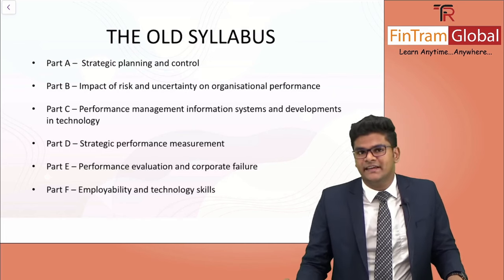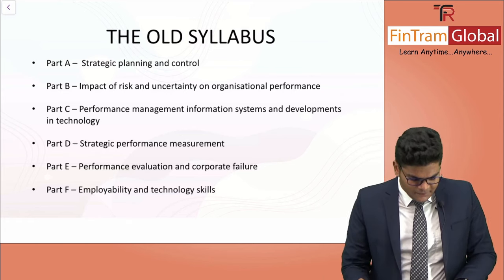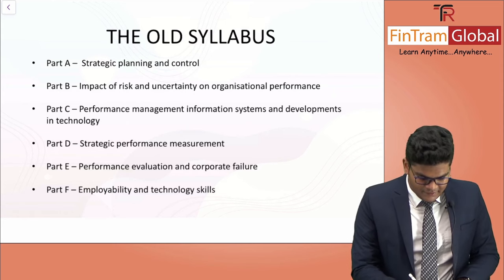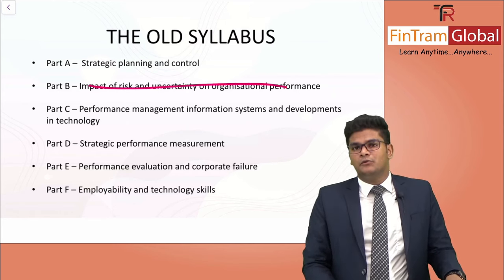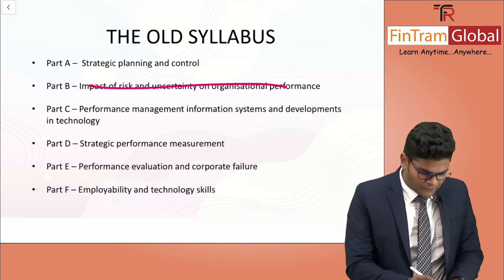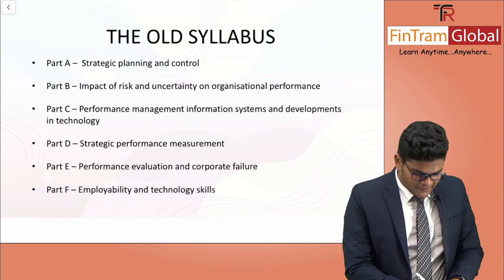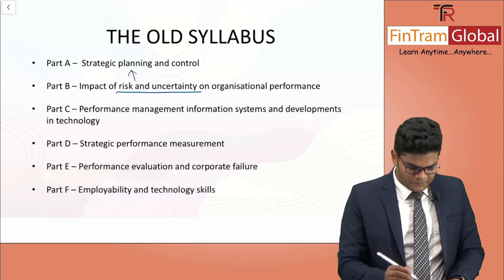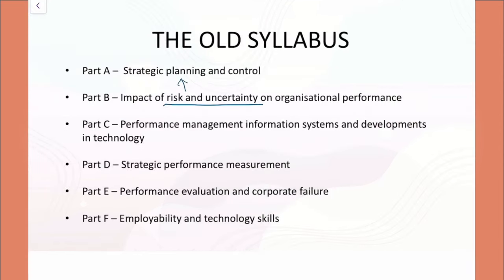The first and foremost thing you have to understand is that syllabus Part B in the old version — that is 'Impact of Risk and Uncertainty' — is now no more. So have we removed it from the syllabus completely? Not necessarily. What has happened is we've merged the topics in relation to risk and uncertainty within syllabus Part A. So it's just a merging activity that has taken place here. Risk and uncertainty is now a part of Strategic Planning and Control.